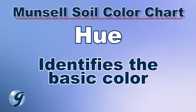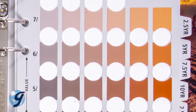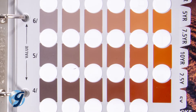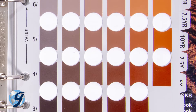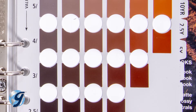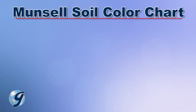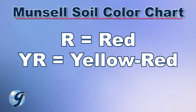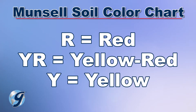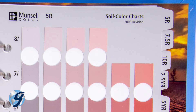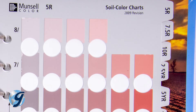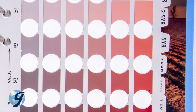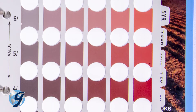Hue identifies basic color such as red, yellow, blue, or in-between hues like yellow-red. Hue is abbreviated as R for red, YR for yellow-red, and Y for yellow, numbered 0 through 10 preceded with the R, YR, or Y.